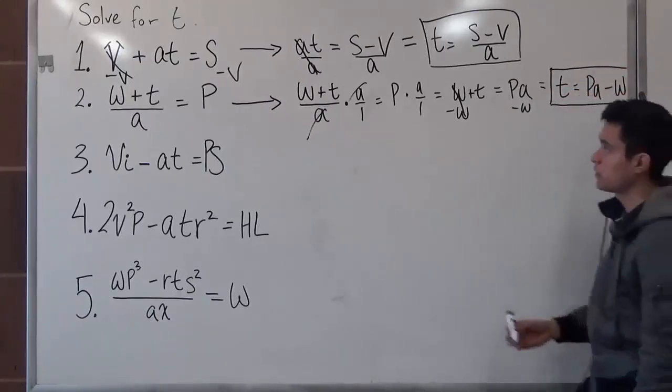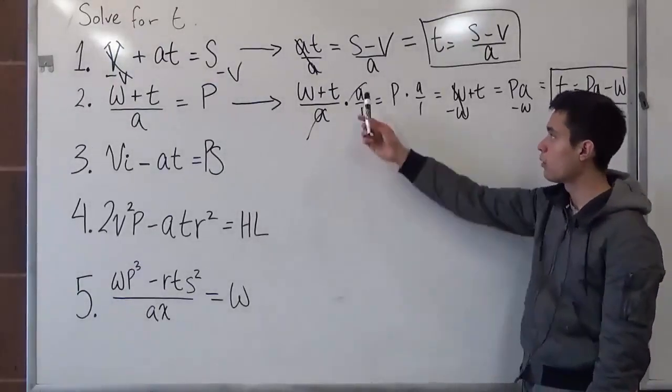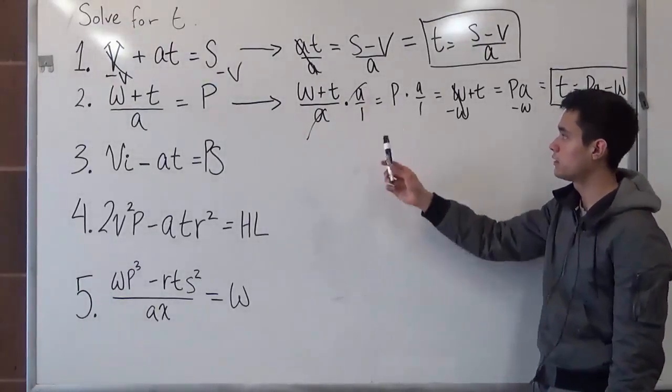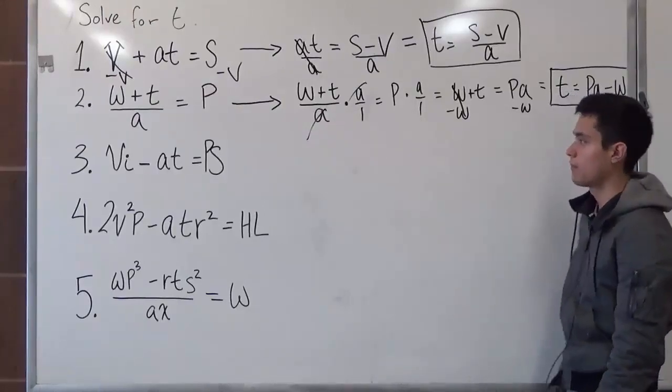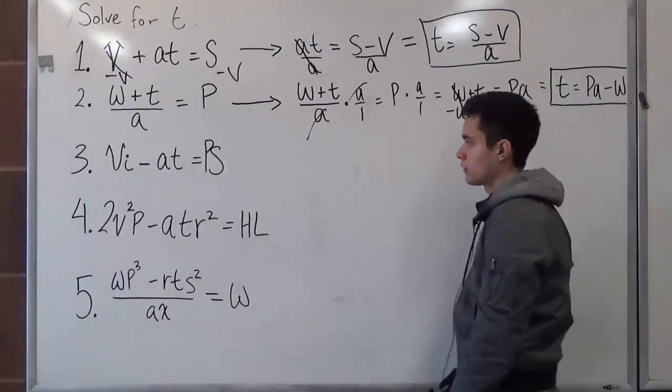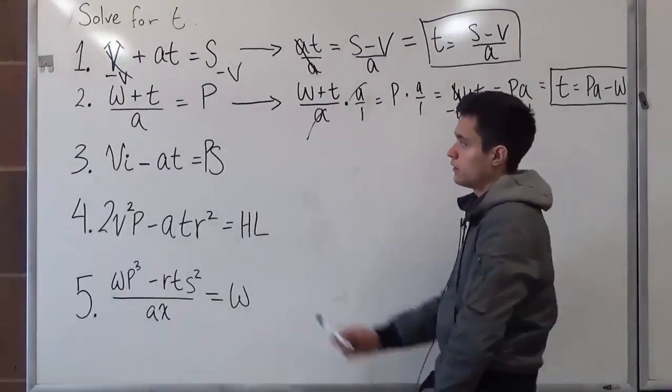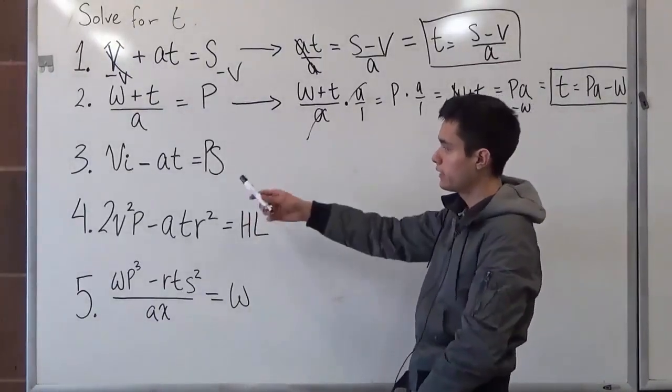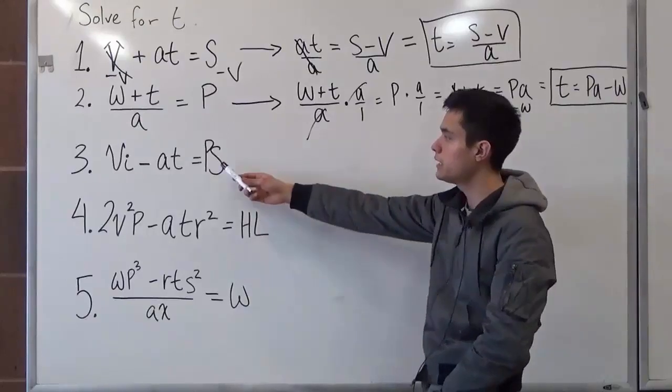So as you can see, when you have a denominator, you want to multiply it to both sides so that it cancels out. So now let's move on to problem number three. Problem number three states v times i minus a times t is equal to p times s.